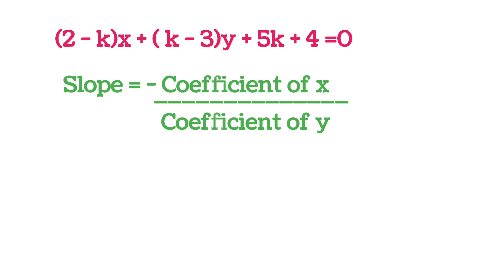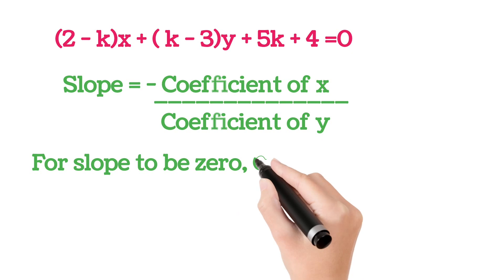Since given line is horizontal, slope of the line is 0. And for slope to be 0, coefficient of x must be 0.